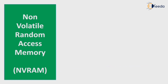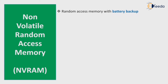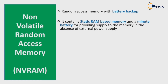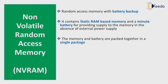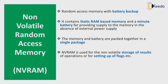Next is NV RAM, or Non-Volatile Random Access Memory — also known as RAM with battery backup. It contains static RAM-based memory and a small battery that provides supply to the memory in the absence of external power. The memory and battery are packed together in a single package. NV RAM is used for non-volatile storage of operation results or for setting flags, and its lifespan is expected to be around 10 years.